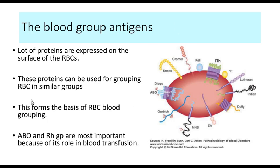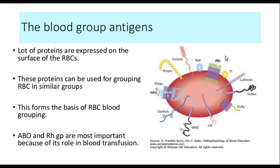These proteins can be used for grouping RBCs into similar groups. For example, if somebody expresses the KEL protein then he is called KEL positive. If somebody is expressing Duffy, you can call it Duffy positive or Duffy negative. Similarly, you have the ABO blood group and the RH blood group, and people are classified accordingly based on whether they express those antigens.